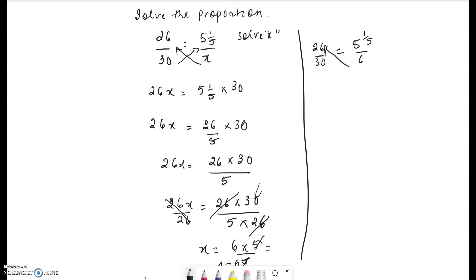You could cross multiply, so 26 times 6 is equal to 5 and 1/5 times 30. 6 times 6 or 36, 6, 2 is at 12, 13, 14, 15, 6.